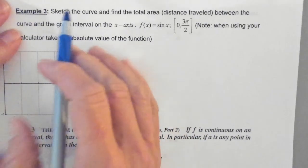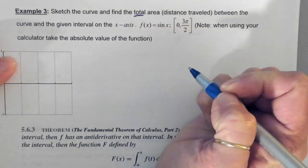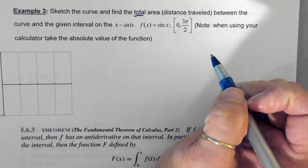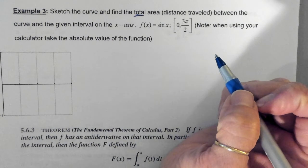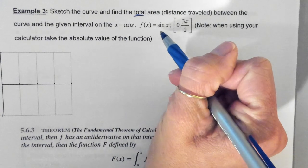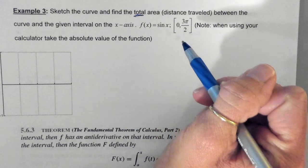So right here, it says sketch the curve and find the total area, which is the distance traveled between the curve and the given interval on the x-axis. Our function is the sine of x, and we're going from 0 to 3π over 2.